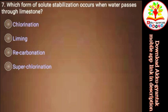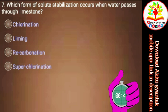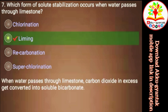Which form of solute stabilization occurs when water passes through limestone? a) Chlorination, b) Liming, c) Re-carbonation, d) Super chlorination. Right.